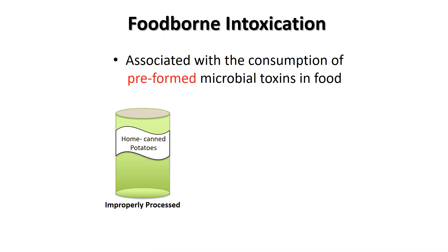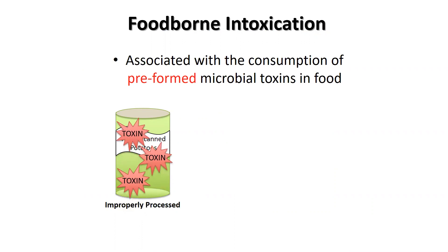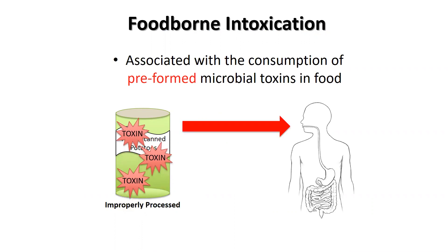In this example, we have canned potatoes that were improperly processed. Potatoes are low acid foods that require pressure canning, but here they were processed in a water bath canner. This provided ideal conditions for the growth of the bacteria Clostridium botulinum. As it grew, it produced bot toxin. When the potatoes containing the toxin were ingested, this led to the illness botulism.